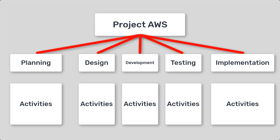The WBS enables project managers to estimate the time, resources, and budget required for each task, and to track progress effectively. It also helps team members understand their roles and responsibilities, and ensures that all project activities are accounted for. Overall, the WBS serves as a foundation for project planning, scheduling, and communication, enabling efficient management through to successful project completion.